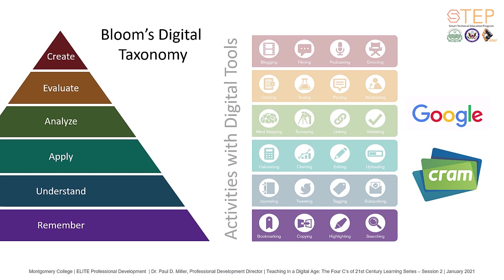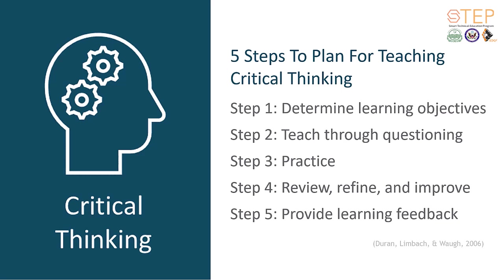Both of these methods allow students to present summarized information or answer questions for drill and practice given by the teacher. In order to promote higher forms of critical thinking in education, we must plan for the teaching of critical thinking, especially when it comes to the use of digital tools to aid in that process. Here are five steps to plan for teaching critical thinking: Step one, determine the learning objectives. Step two, teach through questioning. Step three, practice. Step four, review, refine, and improve. And step five, provide learning feedback. As a reflective practitioner, you will find ways to support critical thinking and elicit the best out of your students.